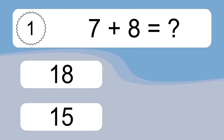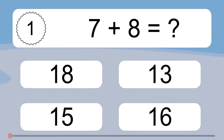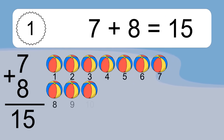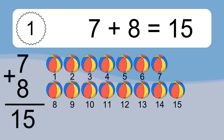7 plus 8 equals what? 7 plus 8 equals 15. Let's count it: 1, 2, 3, 4, 5, 6, 7, 8, 9, 10, 11, 12, 13, 14, 15.